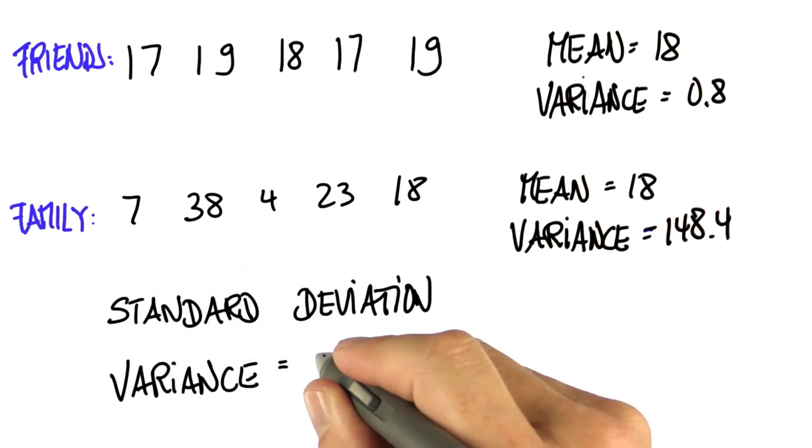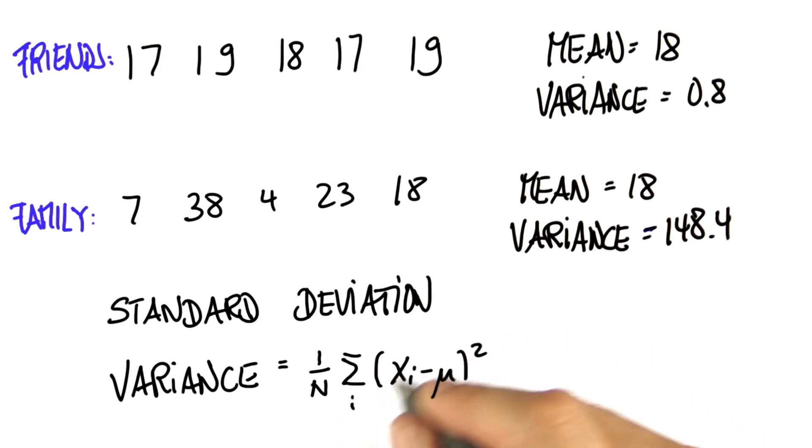The variance, by its very nature, computes something quadratic. It's the quadratic deviation from the mean. In fact, it's the average quadratic deviation from the mean.